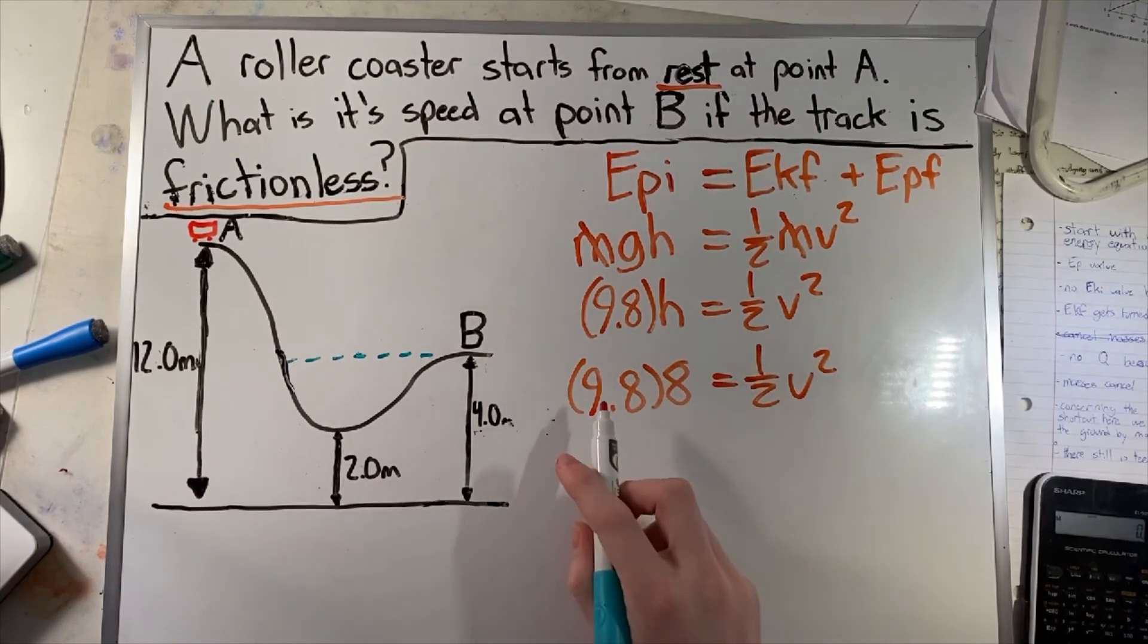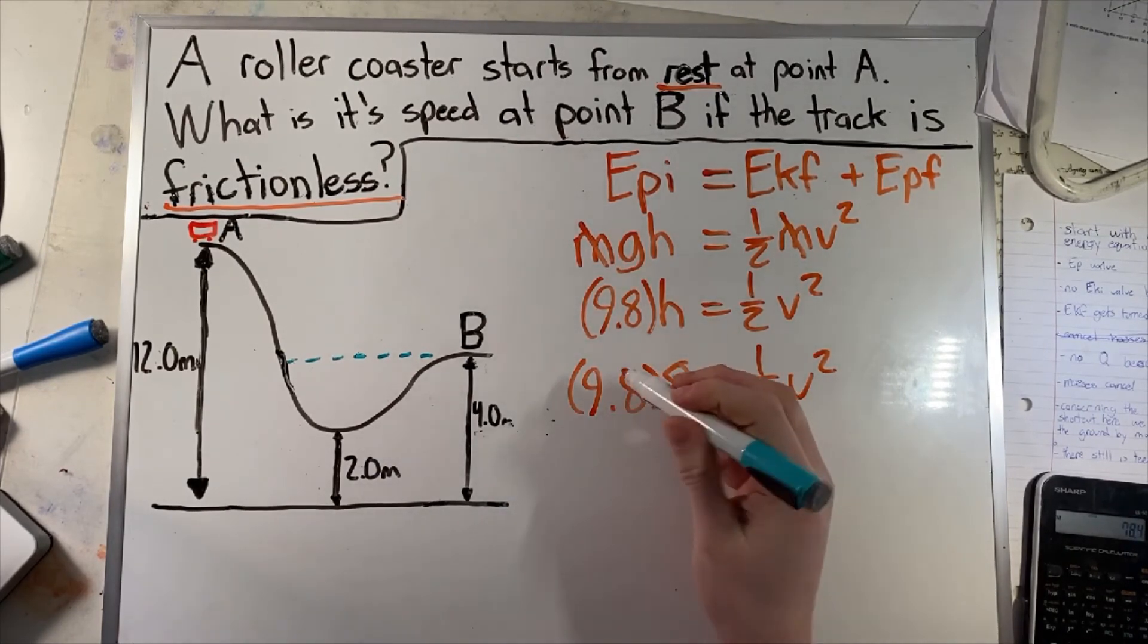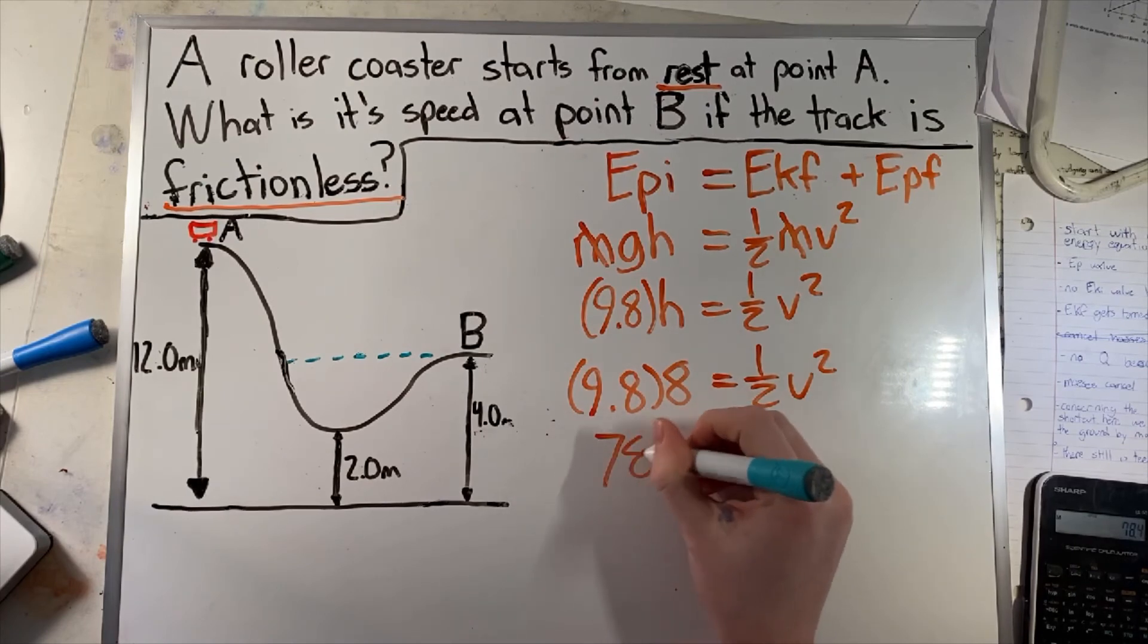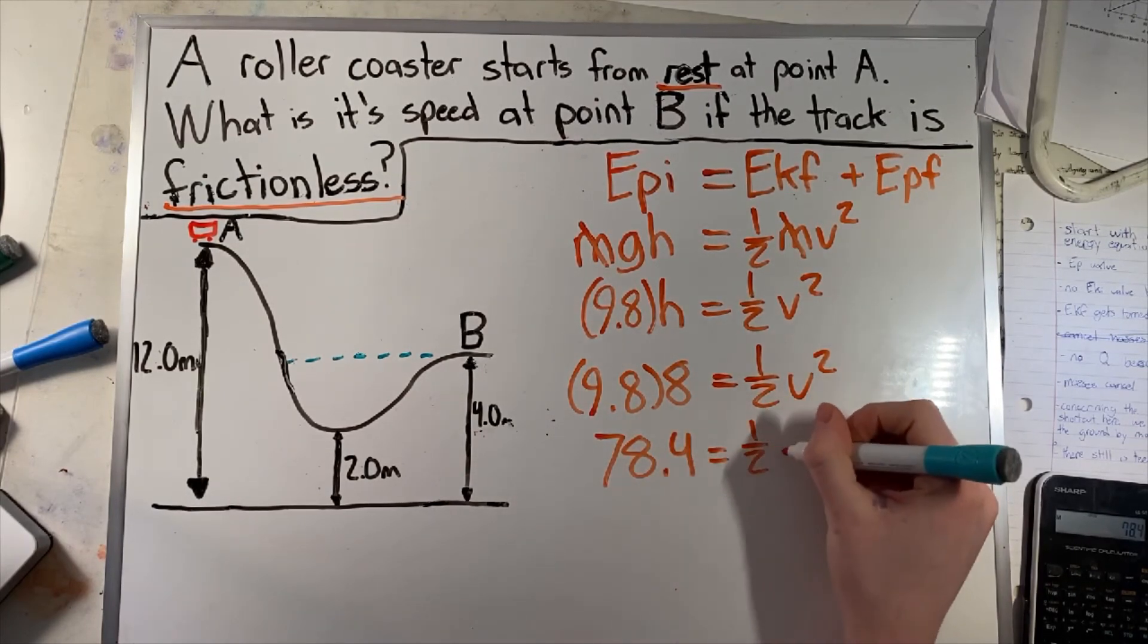So now all we have to do is multiply 9.8 by 8. So 9.8 times 8 gives us 78.4, which equals one half velocity squared.